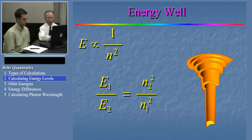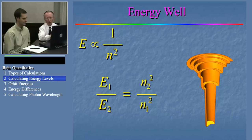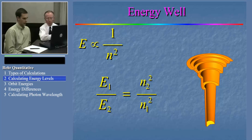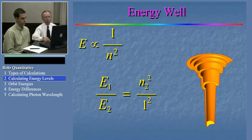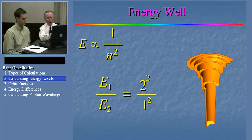Now we have a much simpler equation and we're to the point where we could start substituting in numbers. Our goal is to find out what the energy of one of the orbits is if we know what the energy of the other one is, and we know both n1 and n2. n1 is 1 and n2 is 2. So we have n2 squared, which is 4, over n1 squared, which is 1.